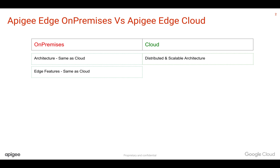Whatever features are available when it comes to API management, developer portal, monetization, and analytics — it is the same as Apigee Edge Cloud, because fundamentally we use the same code base and feature functionality on-premises that is powering Apigee Edge Cloud.